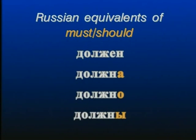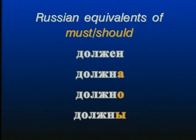So let's take a look. The Russian equivalents of must, should: должен — that's the masculine form; должна — feminine; должно — neuter; должны — plural. Должен is a short-form adjective, and it agrees with the subject of the sentence in number and gender. That's why we have the masculine, feminine, neuter, and plural forms.